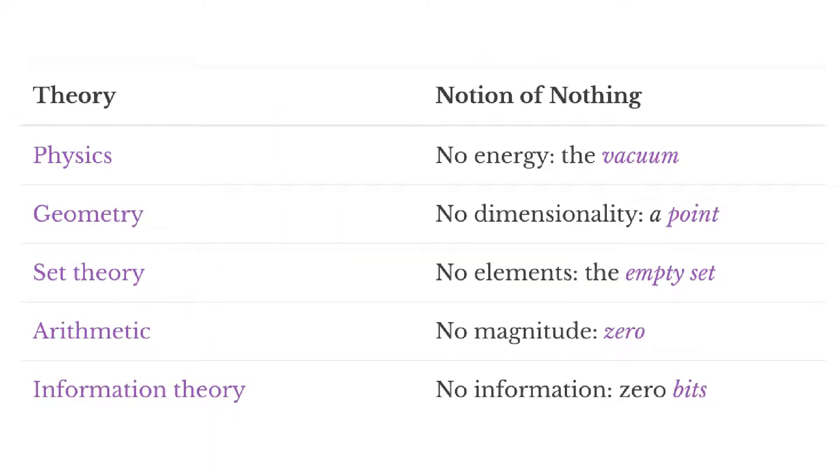For physics, it's no energy, the vacuum. For geometry, it's no dimensionality, a point. For set theory, it's no elements, the empty set. For arithmetic, it's no magnitude, zero. For information theory, it's no information, zero bits. There is an unlimited number of possible theoretical systems. Does this mean there are also unlimited conceptions of nothing?